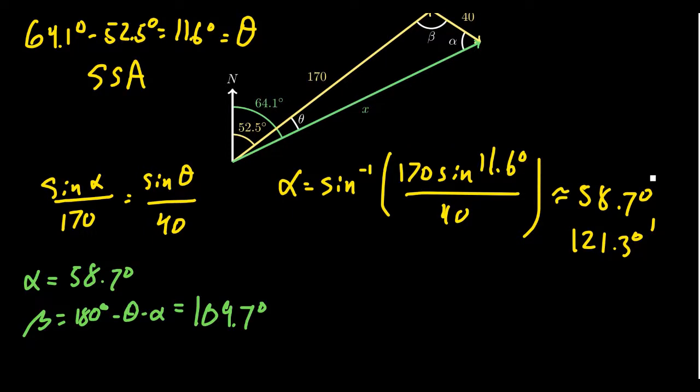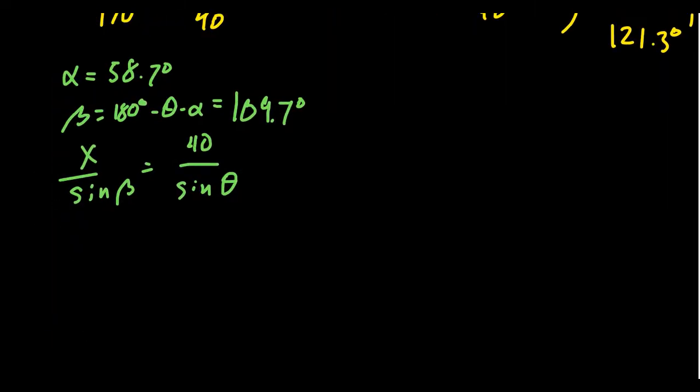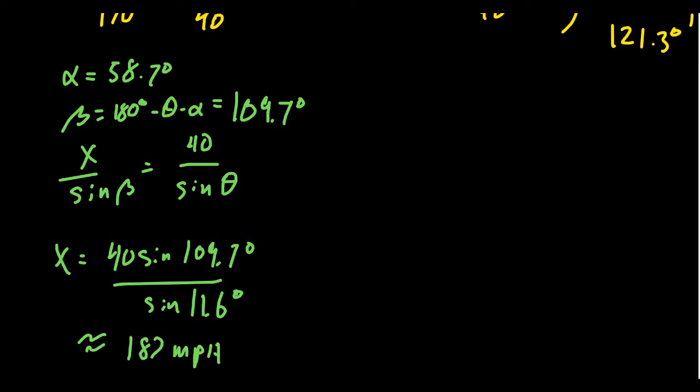And so applying the law of sines, we get that x over sine of beta is equal to 40 over sine of theta, 11.6. Solve for x, we end up with x is equal to 40 times sine of 109.7 degrees over sine of 11.6 degrees. Use your calculator to approximate this thing, and you would end up, make sure you're in degree mode, 187 miles per hour. So that is a possible ground speed for the airplane.